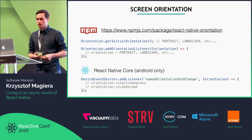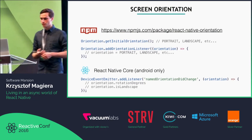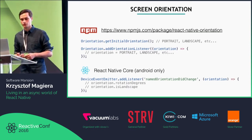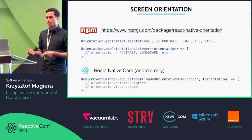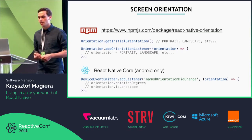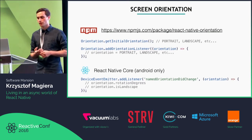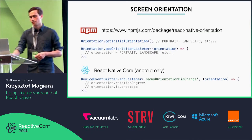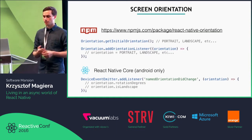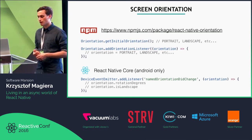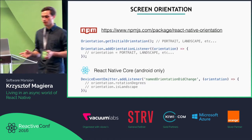Next up is screen orientation. There's one library for handling orientation changes that follows a similar pattern. It exports a synchronized version of the initial orientation that you can access on startup. You can also register for orientation change updates to know whether you've flipped from portrait to landscape or vice versa. There's also an undocumented feature in the native core that works only for Android through the DeviceEventEmitter, with an example app in the React Native core. This is a good solution when you're just interested in what type of orientation you have.